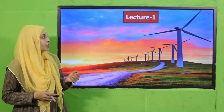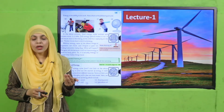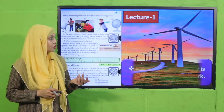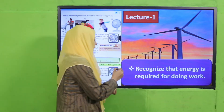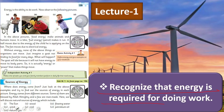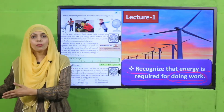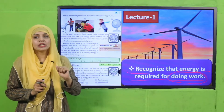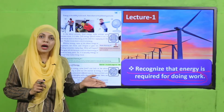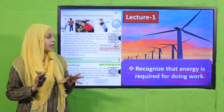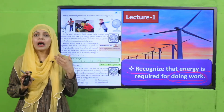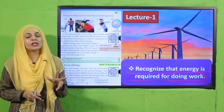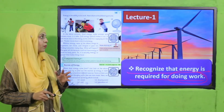In Lecture Number 1, page number 120 will be under reading and discussion, and students will be able to recognize that energy is required for doing work. Whether it is living or non-living, energy is required for all work. If you are playing cricket you need energy, if the fan is moving it needs energy, if you are in a car the car needs energy. Har kaam karne ke liye energy chahiye hoti hai — this will be discussed in Lecture Number 1.